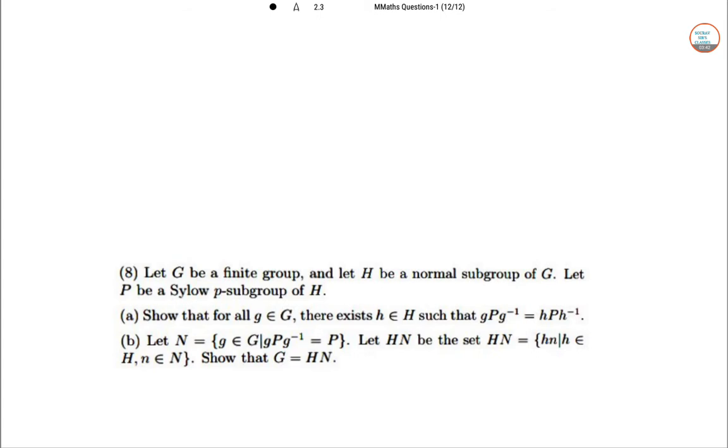Let G be a finite group and H be a normal subgroup of G. Let P be a Sylow p-subgroup of H. Part (a): Show that for all g∈G, there exists h∈H such that gPg⁻¹=hPh⁻¹.